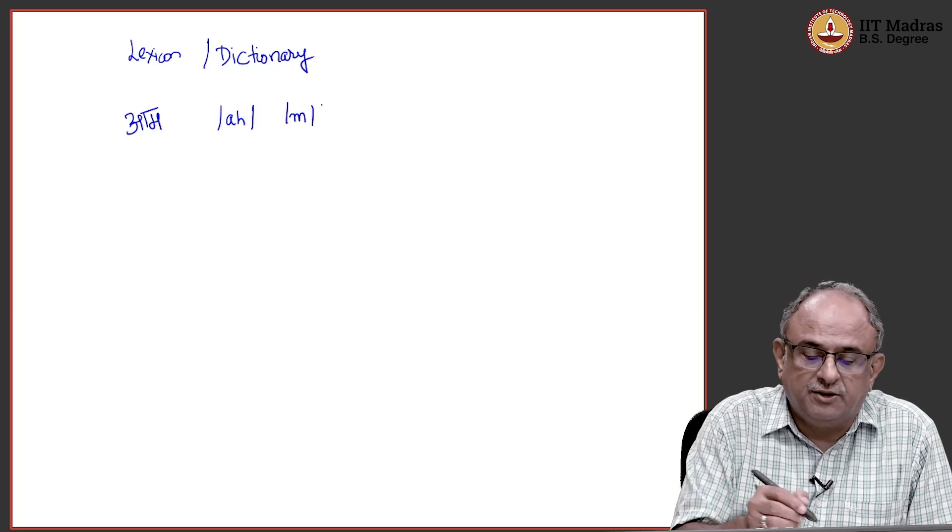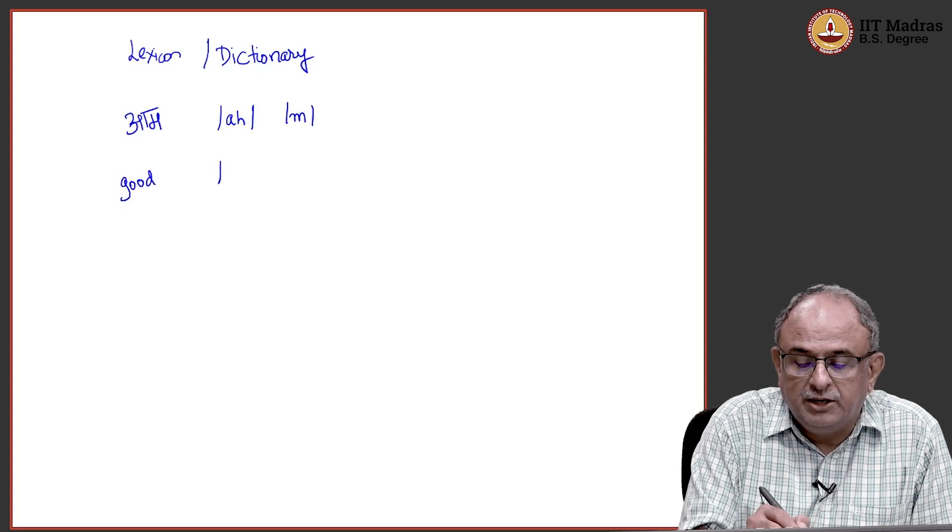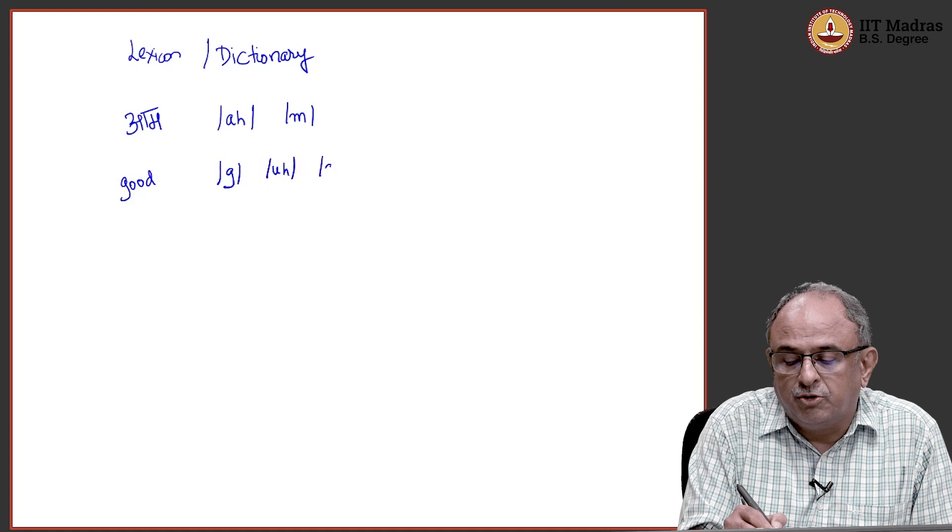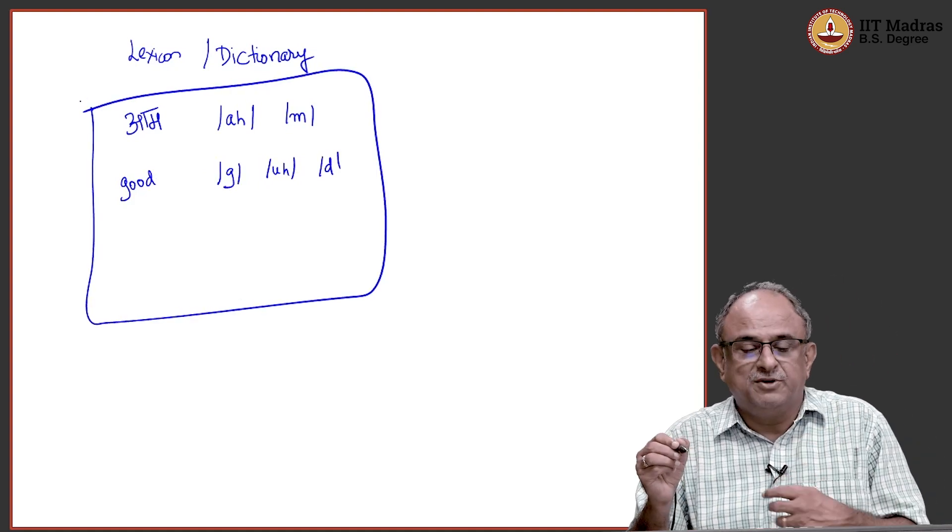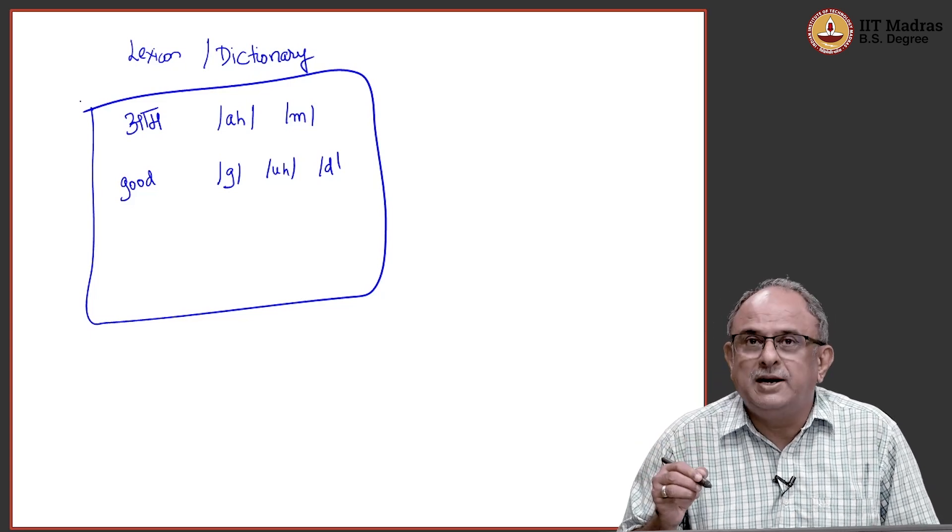I can use the English way of doing phonemes. So, it can be arm like this or I can have the English word and I can use the English language. This is called a lookup table or dictionary, usually it is built per language. I am putting two different languages here, but usually you do it for one language.